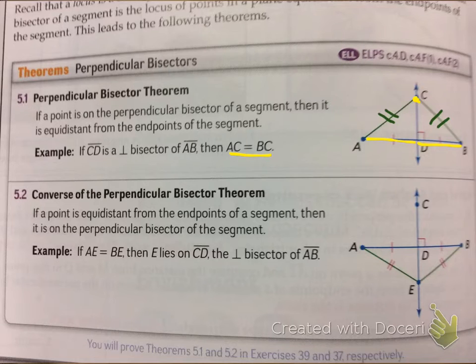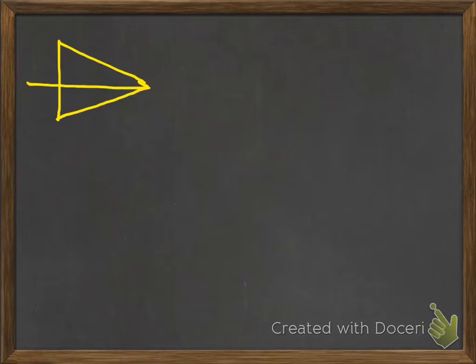Anyways, moving on. And at the same time, we can say that if we know that these sides are congruent, then we know it is forming a perpendicular bisector. That is a perpendicular bisector. That's what this converse is saying. Alright, anyways, moving on. So let's look at some examples.